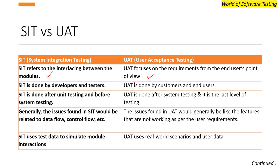SIT is done by developers and testers — both can perform SIT. UAT is done by customers or end users; it is not done by developers or testers. So UAT is basically performed by customers and end users.